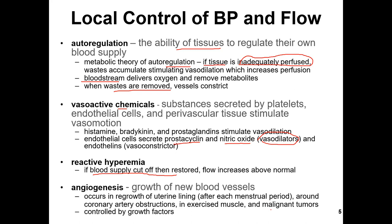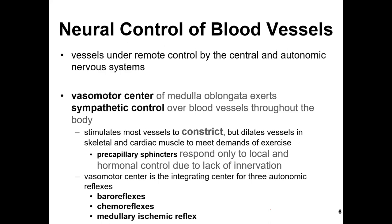Now we can continue. Local control: other active chemicals, reactive hyperemia, and angiogenesis — those are three. Next is neuro-control of blood vessels. When we discuss neuro-control, it involves sympathetic and parasympathetic innervation. Vessels are under remote control by the central and autonomic neural system. Here we will talk about the sympathetic control — sympathetic, if you remember: epinephrine, norepinephrine. Sympathetic control stimulates the constriction of the vessels. When we stop sympathetic innervation, the vessels will dilate. When we activate sympathetic control, they constrict; when we inhibit it, they dilate. We have no parasympathetic control in the vessels.